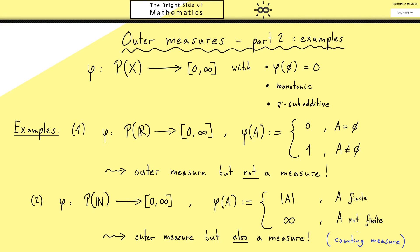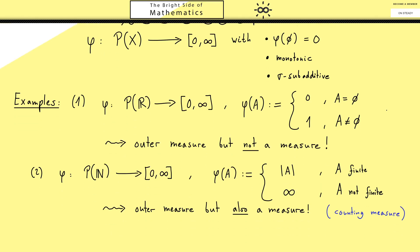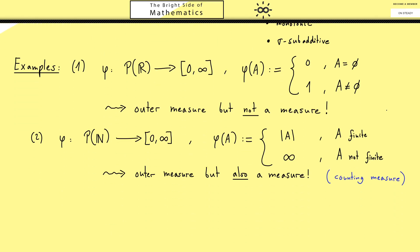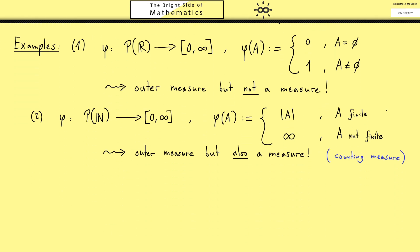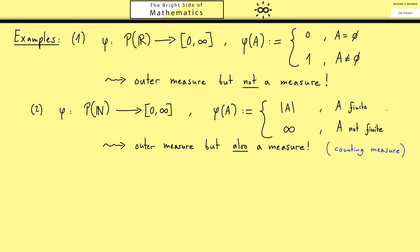The name tells you what to do: you count elements. This one is very important because integration with respect to the counting measure gives you normal sums and series. But we don't want to talk about ordinary measures here, so let's go to the important example 3.